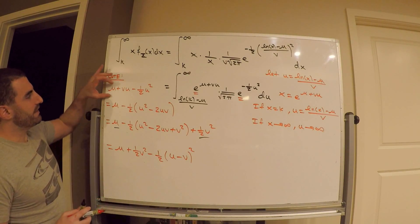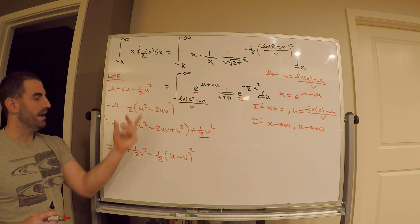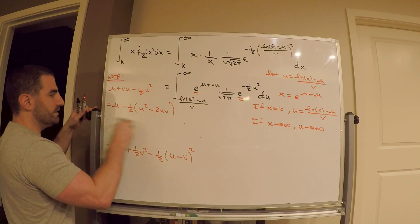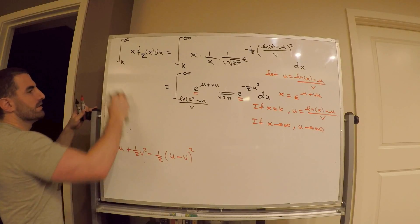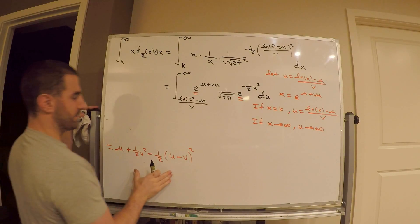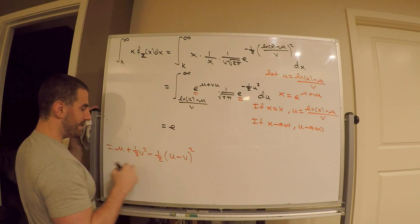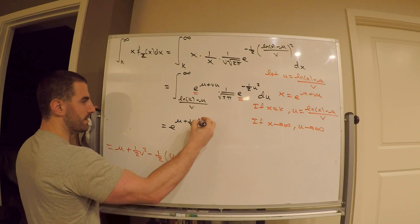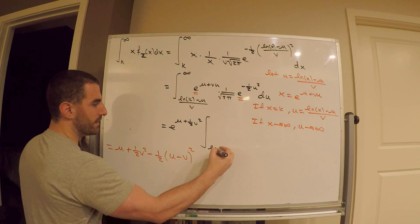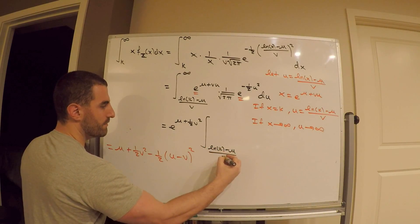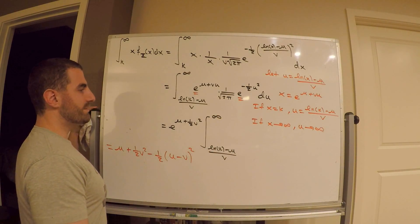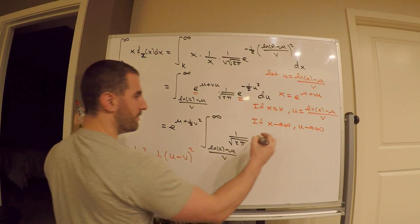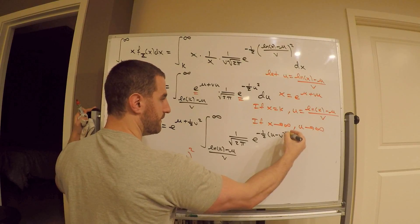So look at what I've done. I've taken the power of e over here and gotten this. Going back, this is equal to e to the mu plus 1 half v squared, factored out as a constant, times the integral from ln k minus mu over v to infinity of 1 over square root 2 pi times e to the negative 1 half times u minus v, squared, du.